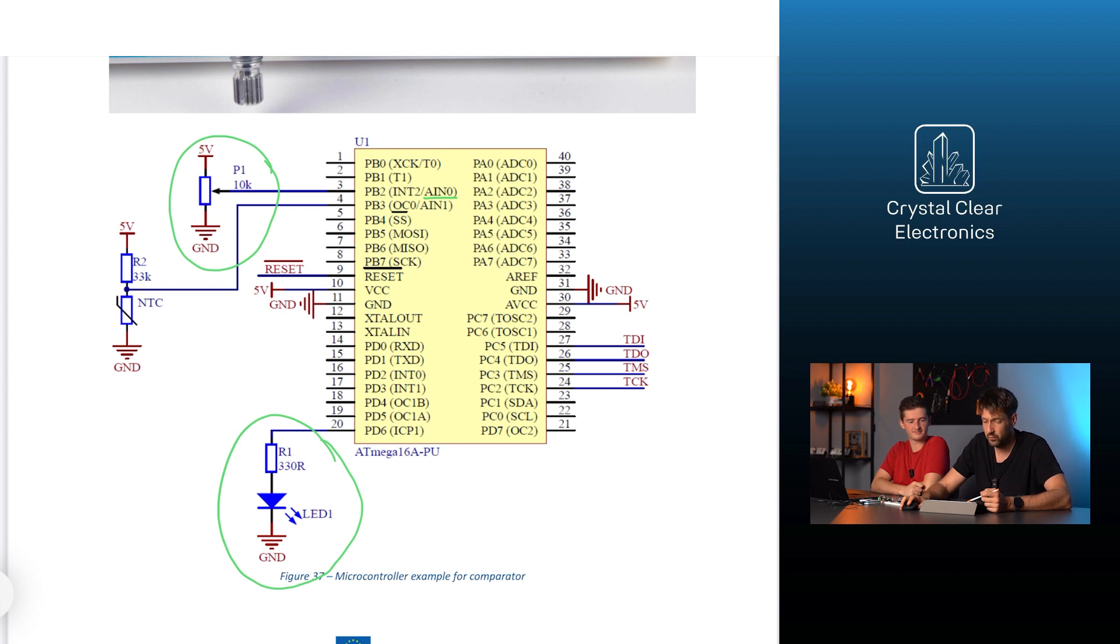To measure temperature, use the 22 kilo ohm NTC thermistor and connect 33 kilo ohm resistance in series with it. Connect their common point to the comparator's A in one negative input.